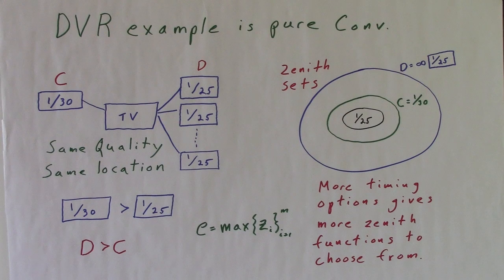In my first video, I stated that I prefer an infinite number of inconvenient DVRs to one convenient limited DVR. Option D gives me more timing options than Option C, which is having only one of the superior DVRs. Option D is the more convenient arrangement, because it gives me more zenith functions to choose from.